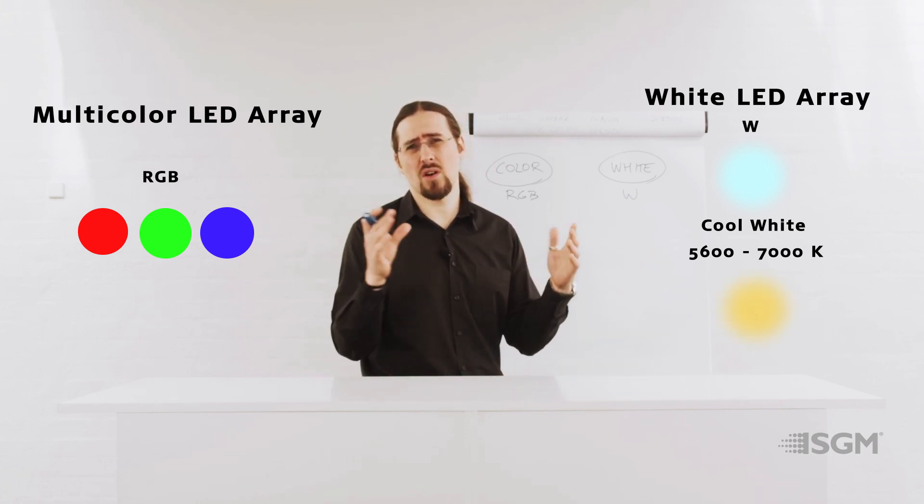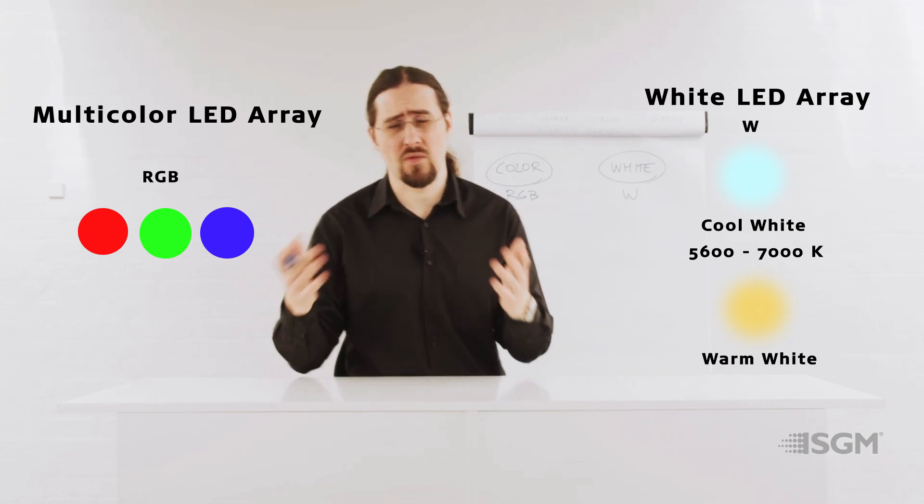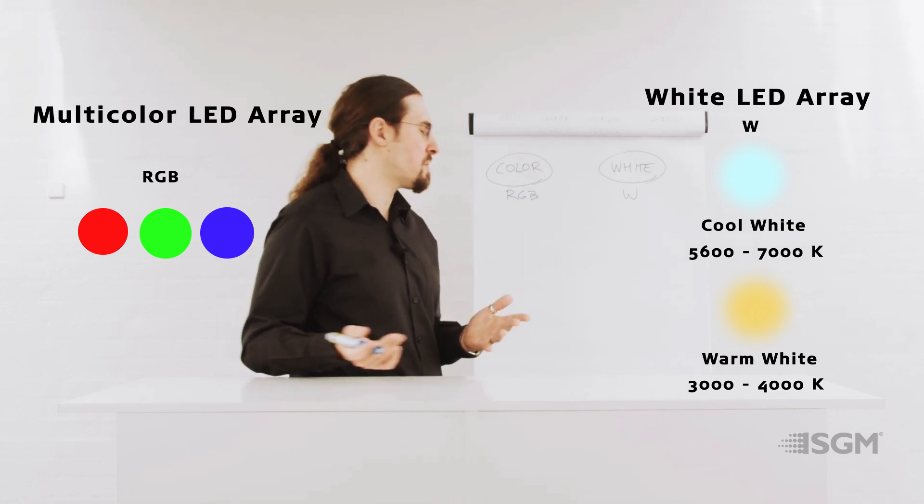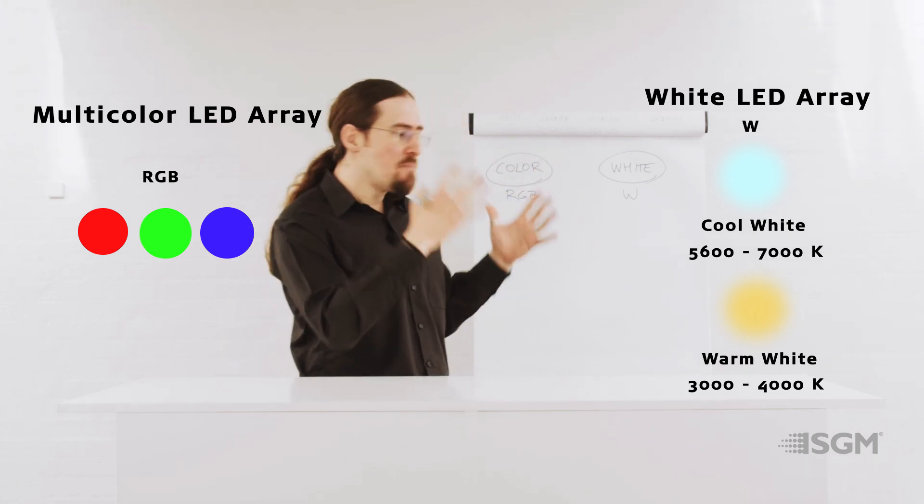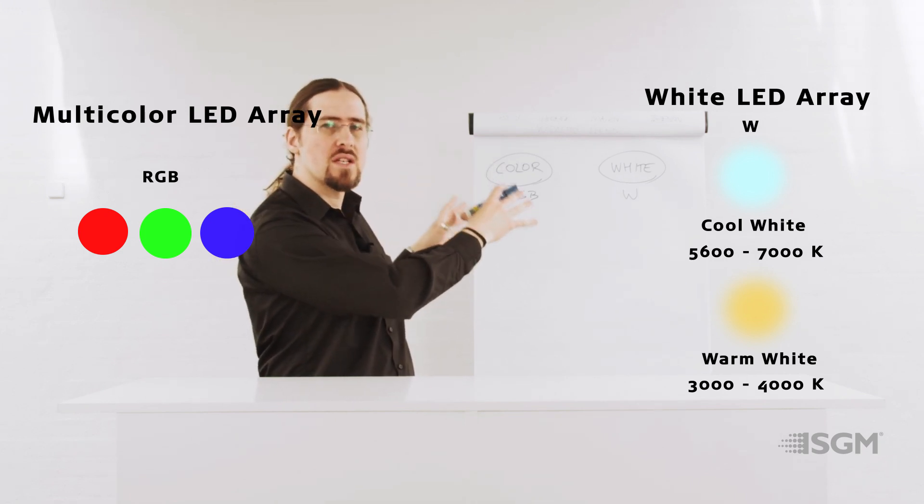But you also have white LED arrays that are warmer. So instead of using cold color temperatures, they are using warm color temperatures, like 3,000 Kelvin or 4,000 Kelvin. We will discuss about that.